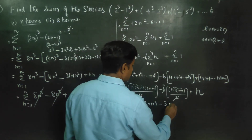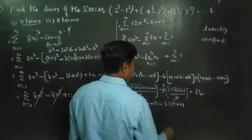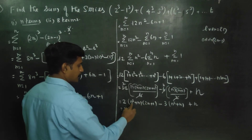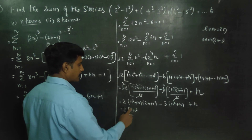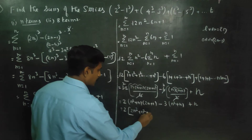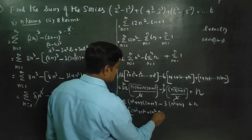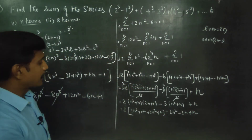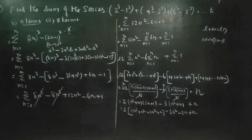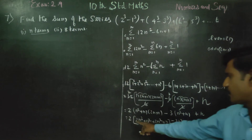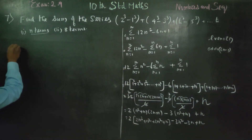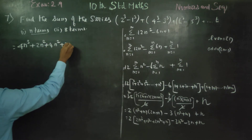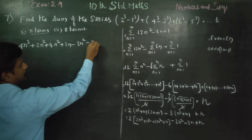Expanding: n into n plus 1 gives n squared plus n. Then multiplying with 2n plus 1: n squared into 2n gives 2n cube, n squared into 1 gives n squared, n into 2n gives 2n squared, n into 1 gives n. Then minus 3 gives minus 3n squared minus 3n. Collecting: 4n cube plus 2n squared plus 4n squared plus 2n minus 3n squared minus 3n plus n.